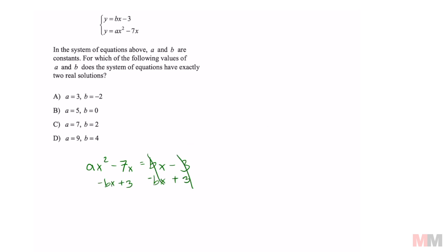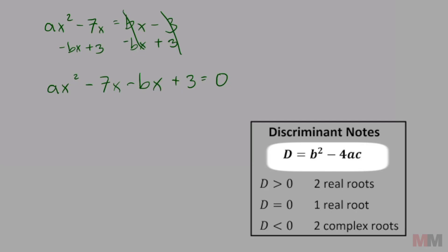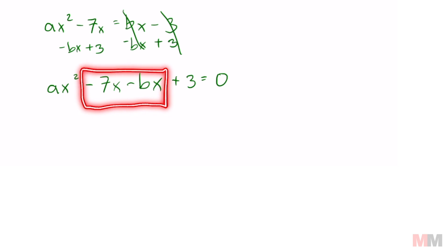Those are going to cancel out. So now on the left side of that equation, you're going to get ax squared minus 7x minus bx. You can't combine those plus 3 equals 0. So for me to use this discriminant formula, I need an a, a b, and a c, which are the constants of that quadratic equation. You can actually combine these somehow because out of those two, we can factor out an x. And if I factor out an x from those middle terms, I'll be left with negative 7 minus b.